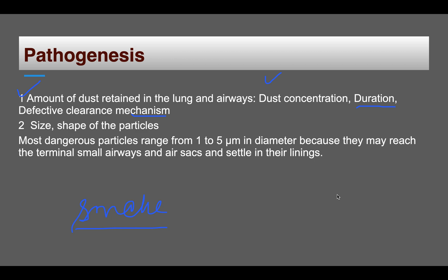The size and shape of particles also matter. Larger particles are effectively removed by cilia or entrapped in mucus. However, particles of 1 to 5 microns in size can reach the terminal small airways and air sacs, where they settle in the linings. These 1 to 5 micron particles are the most dangerous ones.